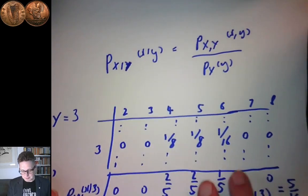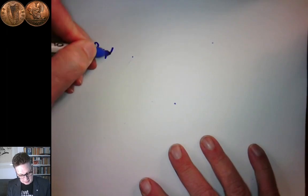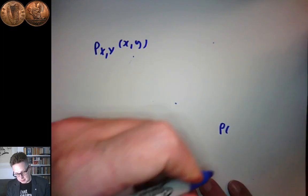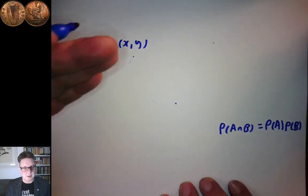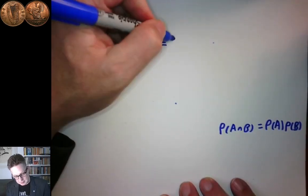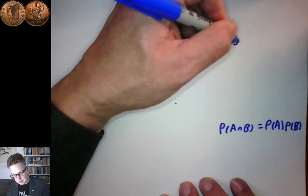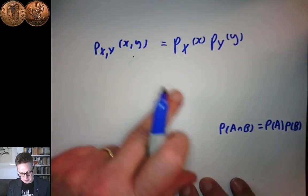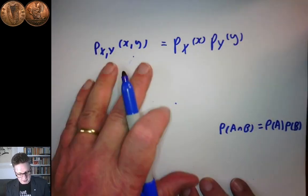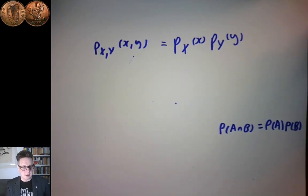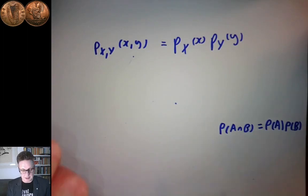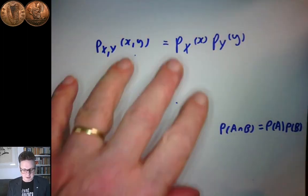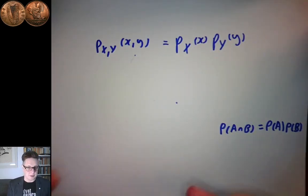One final note: we have a definition of independence for random variables. The definition is the same as before — P(A and B) = P(A) × P(B). Written in terms of random variables, X and Y are independent if and only if the joint distribution equals the product of the marginal distributions: P_XY(x,y) = P_X(x) × P_Y(y). This means there's nothing different in the joint distribution than you'd expect if the two random variables had nothing to do with each other.